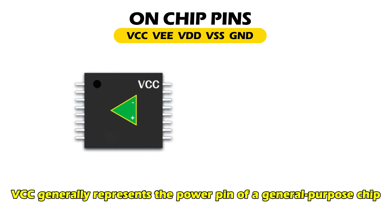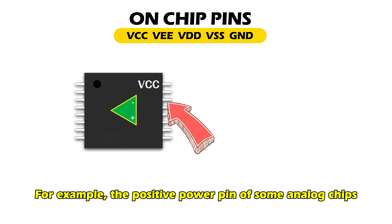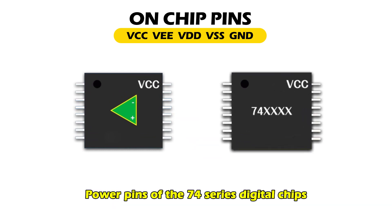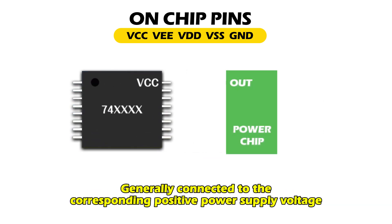VCC generally represents the power pin of a general-purpose chip — for example, the positive power pin of some analog chips, or the power pins of the 74 series digital chips — generally connected to the corresponding positive power supply voltage.